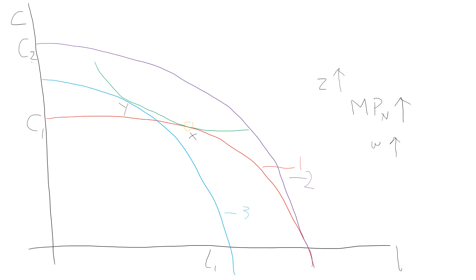What we're trying to do is decompose the income and substitution effects. If the move towards the left — the substitution effect — is equal to the income effect, we end up at the same point, meaning there is no change in the level of employment. But we have to decide which effect is going to dominate: the substitution effect or the income effect.